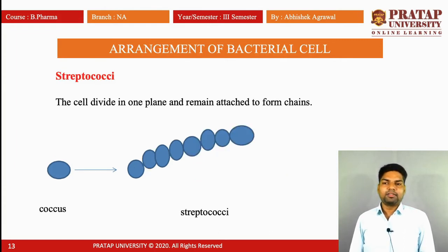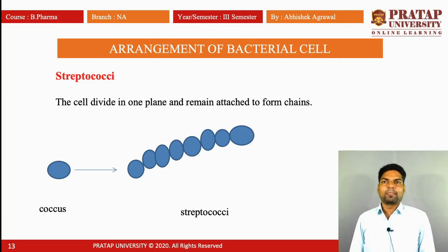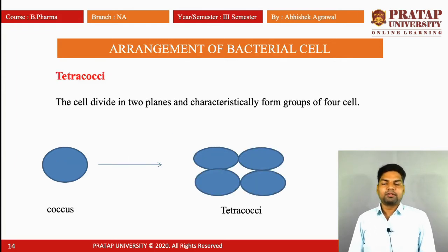Second is streptococci. The cell divides in one plane, either horizontal or vertical, and remains attached to form chains. The chain is made up of four to twenty-two cells.